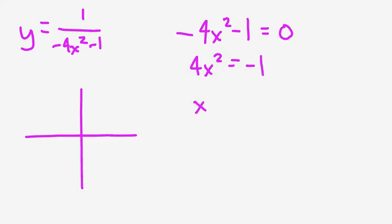If I divide both sides by 4, I'll end up with negative 1 over 4. And then if I take the square root of both sides, I'll end up with the square root of negative 1 over 4. This, however, isn't possible in the real number system, and that tells us there's going to be no vertical asymptotes.